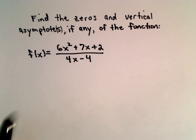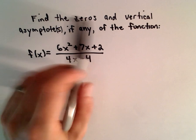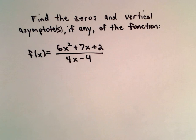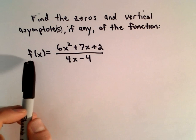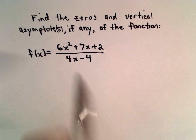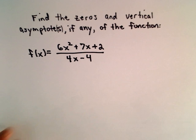Okay, here we're going to find the zeros and vertical asymptotes, if there are any, of the function f(x) = (6x² + 7x + 2)/(4x - 4).